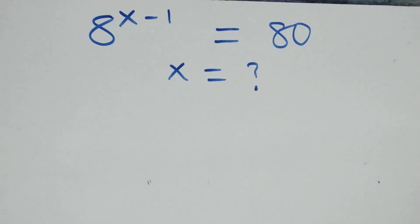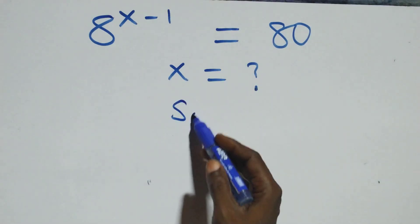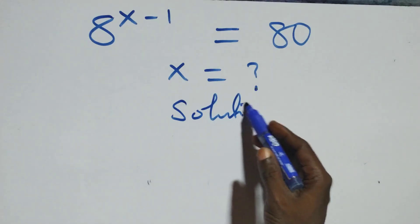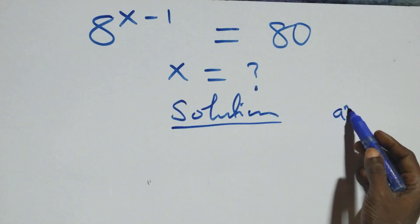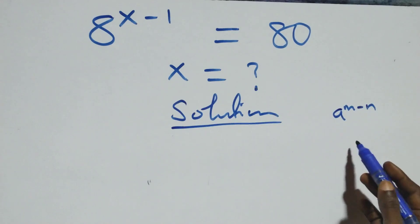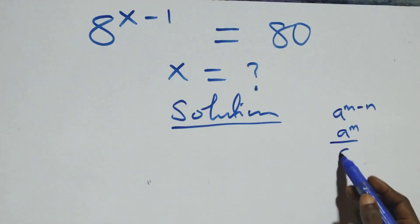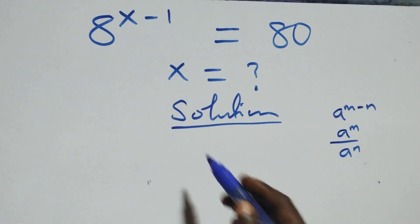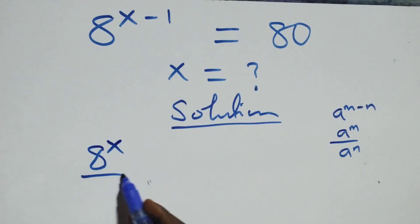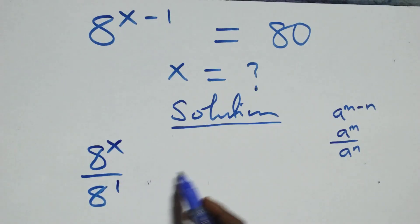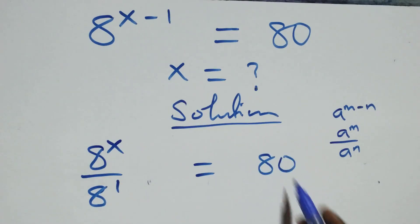Hello, you're welcome. How to solve this nice exponential equation. What we have here follows: a raised to power n minus n, which is the same thing as a raised to power n over a raised to power n. This here is the same thing as a raised to power x over a raised to power 1, equals 80.